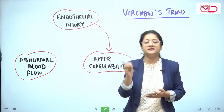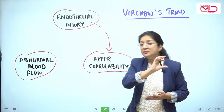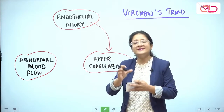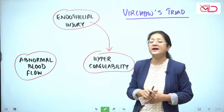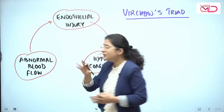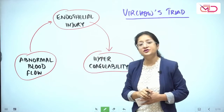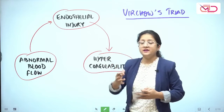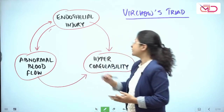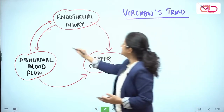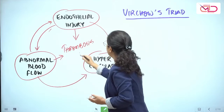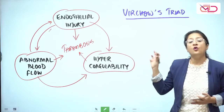Now let's talk about abnormal blood flow patterns. Normal blood flow is laminar, meaning plasma flows around the periphery while cellular components — WBCs, RBCs, and platelets — flow in the middle. This means cellular components get little chance to interact with the endothelial lining. Whenever this laminar flow is disturbed, it can lead to coagulation. Turbulent blood flow can trigger endothelial injury, and stasis of blood flow can trigger hypercoagulability. So thrombosis revolves around endothelial injury, abnormal blood flow patterns, and hypercoagulability.